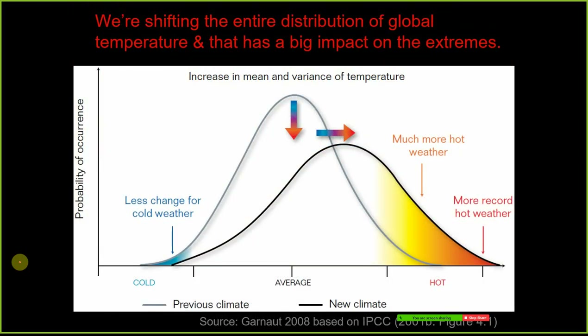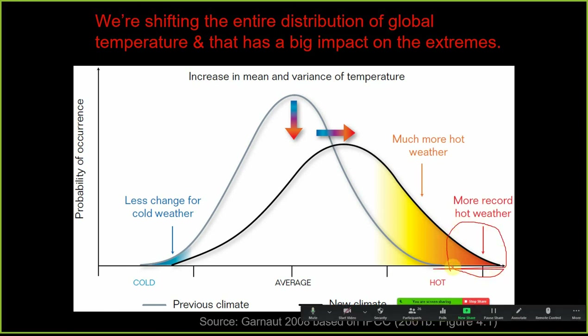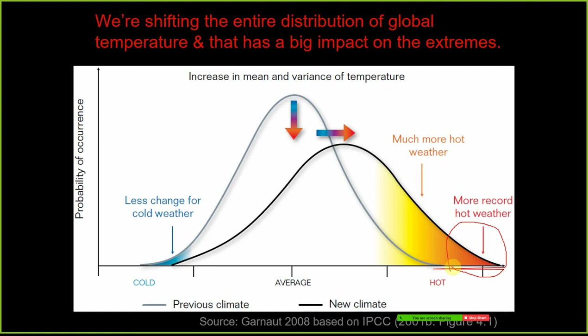We're shifting the entire distribution of global temperatures, and that has a big impact on the extremes. Even at our current levels of one degree of mean global temperature rise we're experiencing extremes in fire, temperature, and many other aspects. This shift in the temperature distribution is going to have huge implications for your careers whether you're a town planner, environmental manager, or engineer — affecting both your day-to-day work and your long-term job prospects. There's going to be a lot of job opportunities in solving climate change, both in mitigation and adaptation.